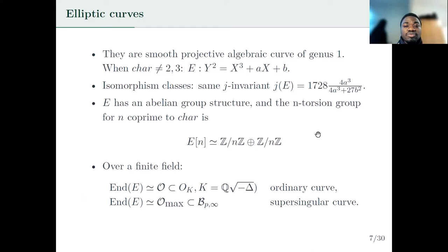Elliptic curves are smooth projective algebraic curves of genus 1, and when the characteristic of the field of definition of the curve is different from 2 and 3, every elliptic curve is isomorphic to a short Weierstrass curve. Isomorphism classes of elliptic curves are determined by the j-invariant. Every elliptic curve has a unique abelian group structure and for any integer n coprime to the characteristic of the field, the n-torsion group is a rank-2 free group generated by two linearly independent points of order n.